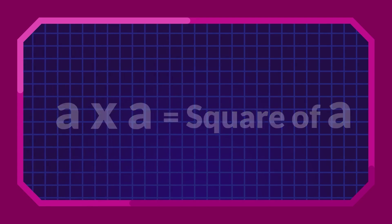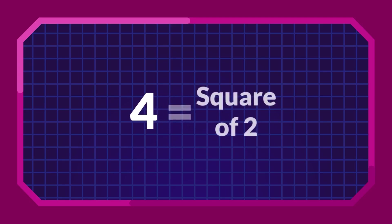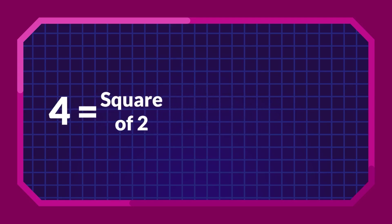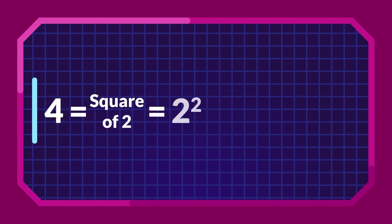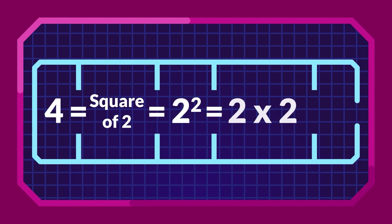For example, if we multiply the number 2 by itself — that is 2 by 2 — we will get 4. Now 4 will be called the square of 2. It is written as 2 squared equals 4, which means the same as 2 times 2 equals 4.